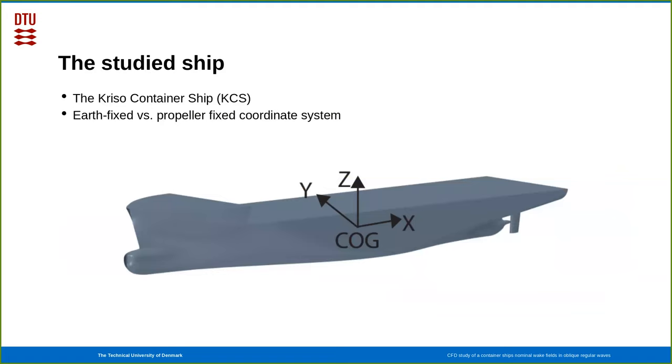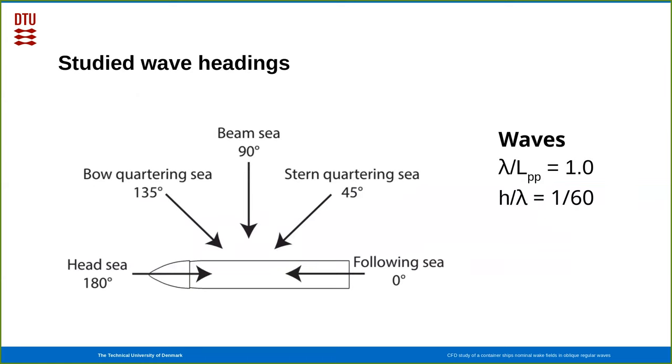The ship that we study was a CRESA container ship, an academic ship that was never built in full scale, but used in many studies, both in towing tanks and in safety calculations. We usually present the results in a coordinate system that follows the propeller, but also in a fixed coordinate system. We study different wave headings: head sea, bow quartering sea, beam sea, stern quartering sea, and following sea. The waves are as long as the ship in this case, and the steepness of the waves are 1 to 60.